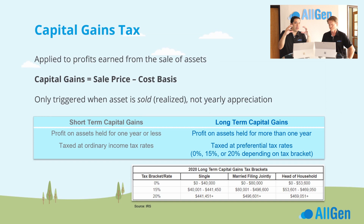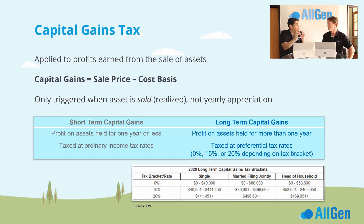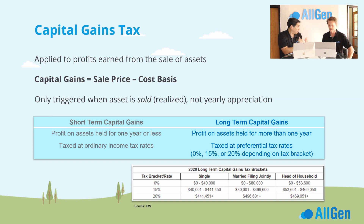Capital gains, in its generic definition, is basically what you sold minus what you bought — known as your cost basis — and that difference is the capital gain. It's taxed in one of two ways: short-term or long-term. Short-term is if you profited on the sale of an asset within a year — sold in less than a year, that's a short-term capital gain, and it gets taxed at your ordinary income tax rate. But if you sell something you've held for longer than a year, that's long-term capital gains.